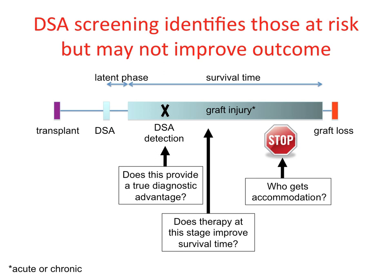Regarding DSA as a screening test: DSA can develop quite early but is often not detected until there is already evidence of graft injury. Proteinuria may be detectable before the DSA. It is unclear whether early detection provides a true diagnostic advantage, since we lack therapy that clearly improves outcomes. Furthermore, up to 20% of patients appear to have stable graft function despite having DSA — a phenomenon called accommodation — and we wouldn't want to treat those patients unnecessarily.